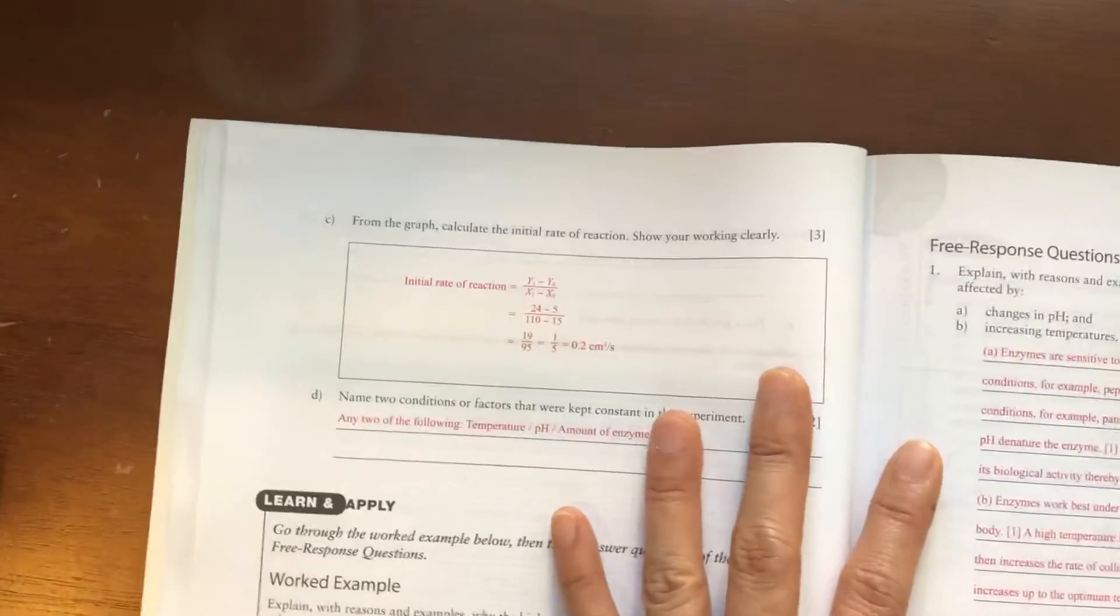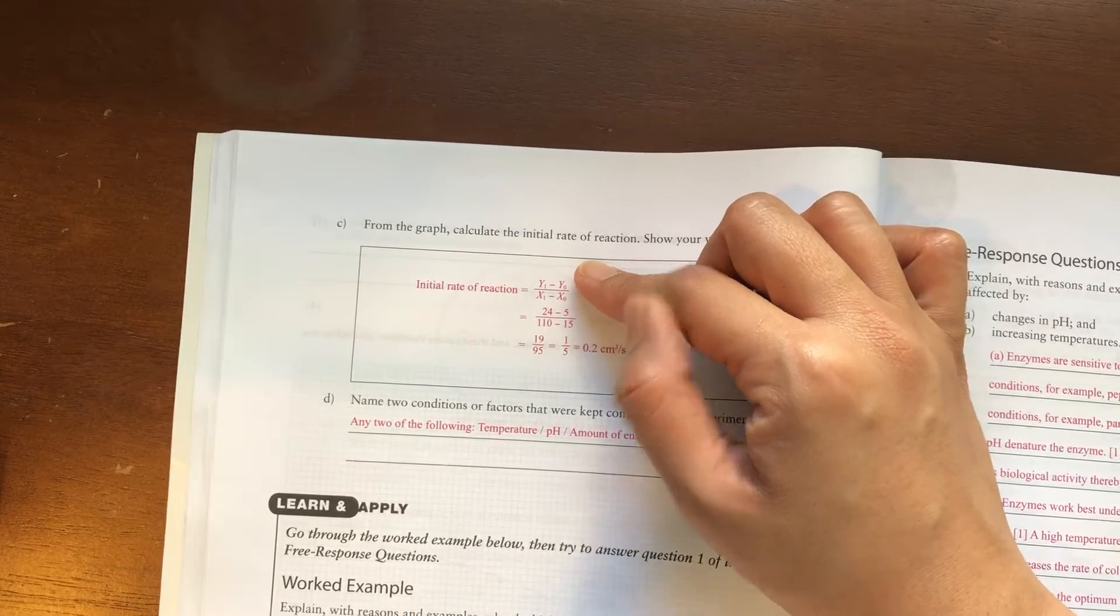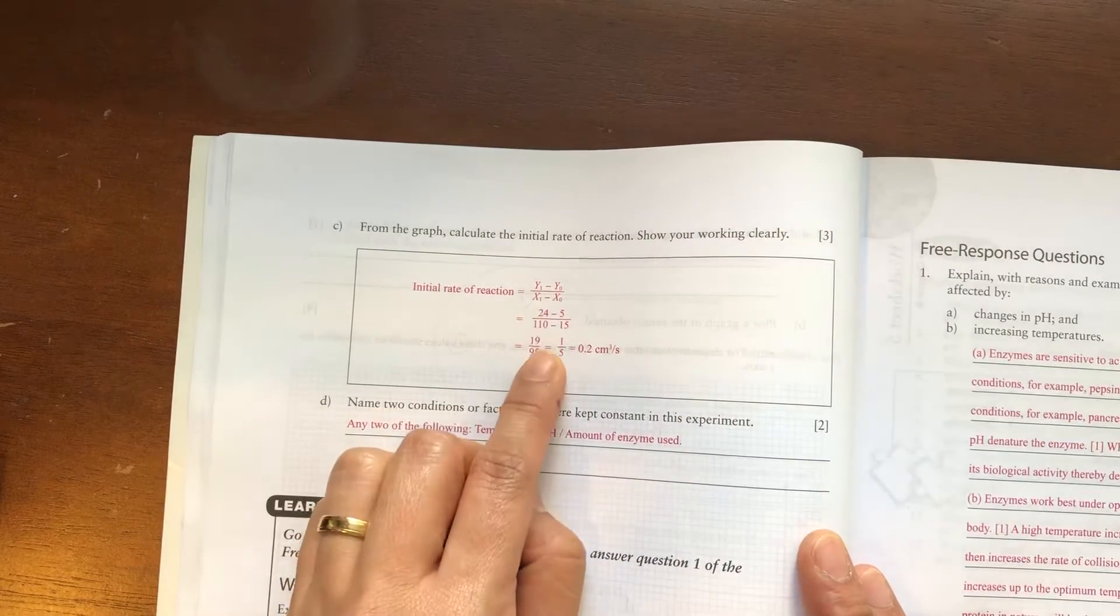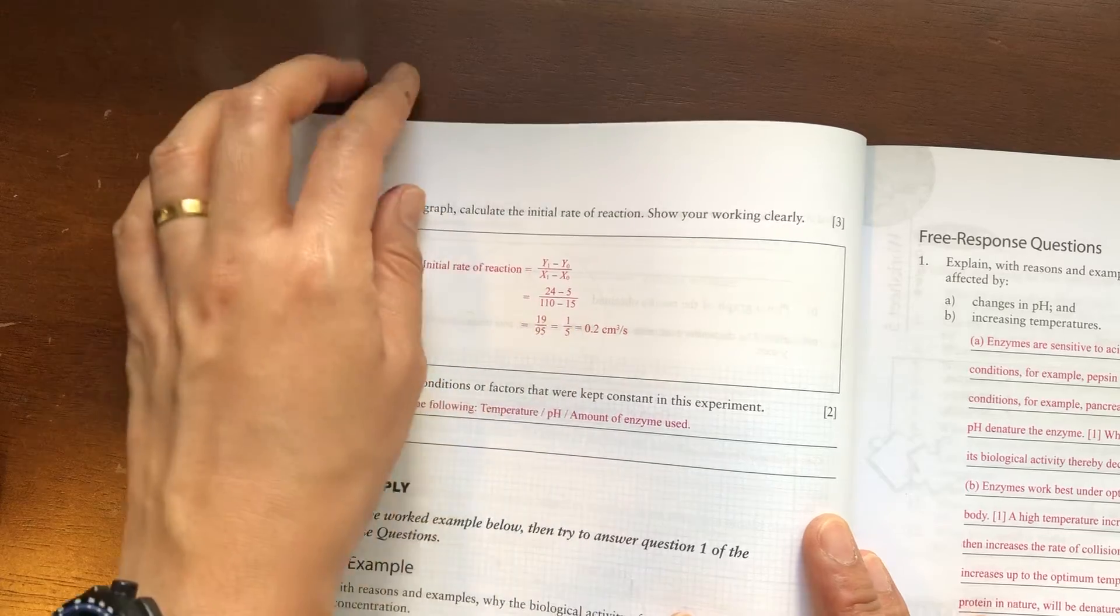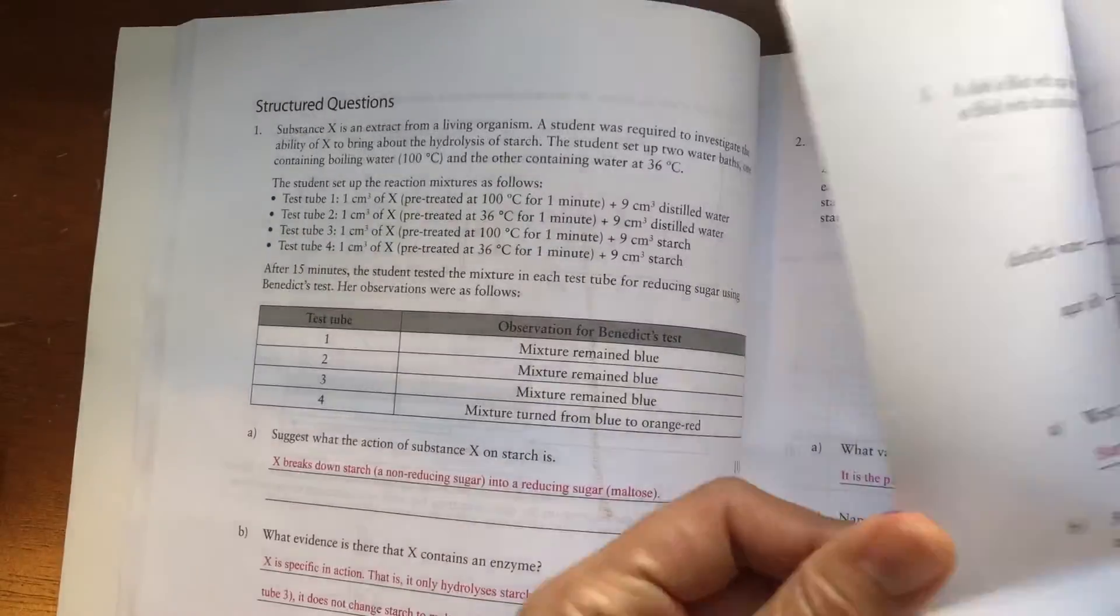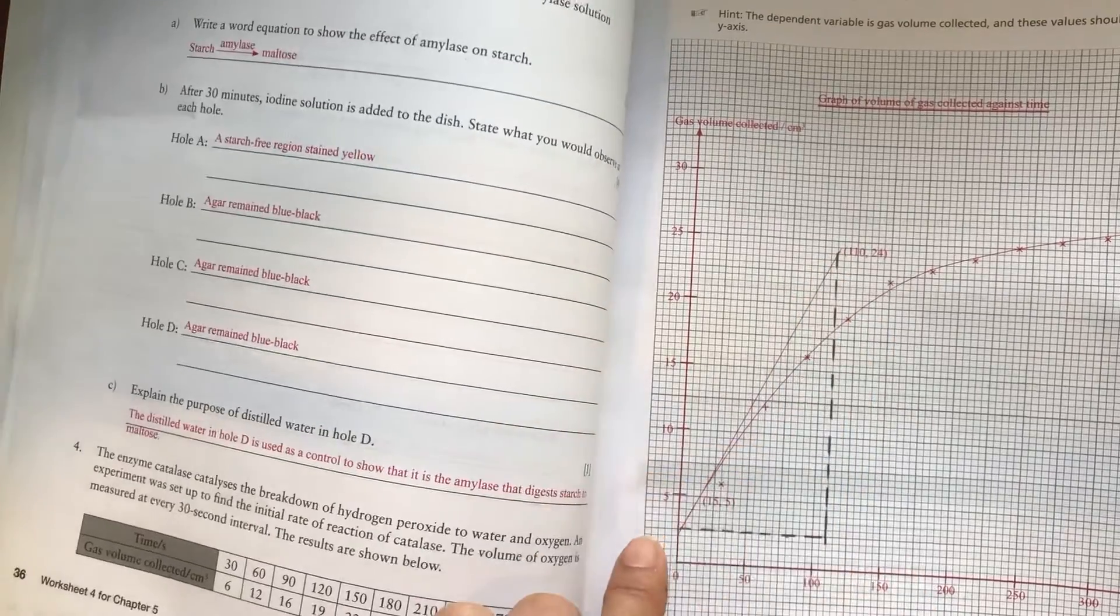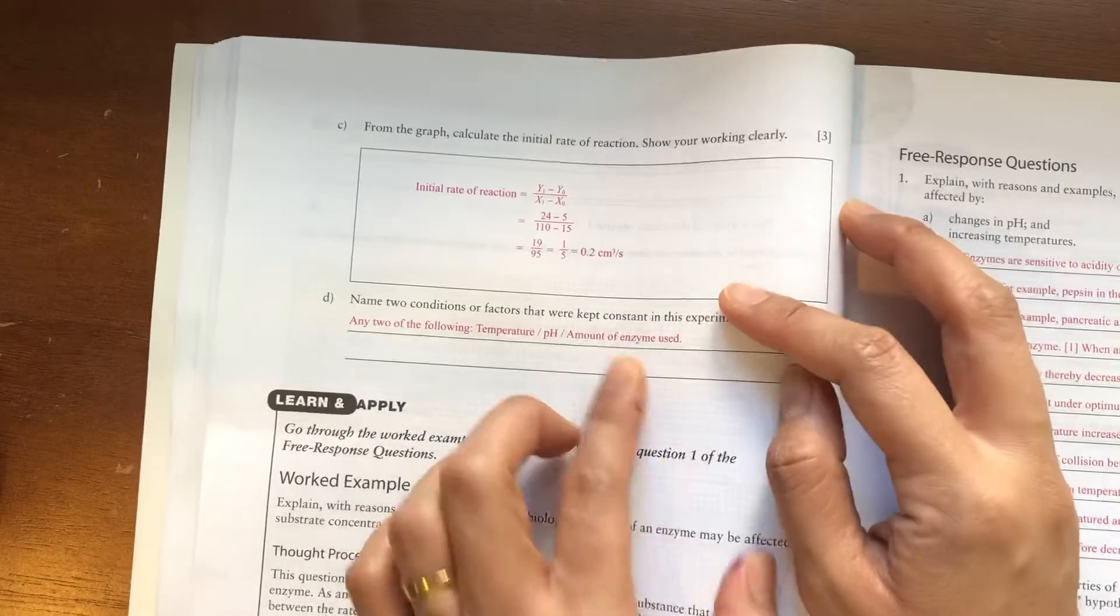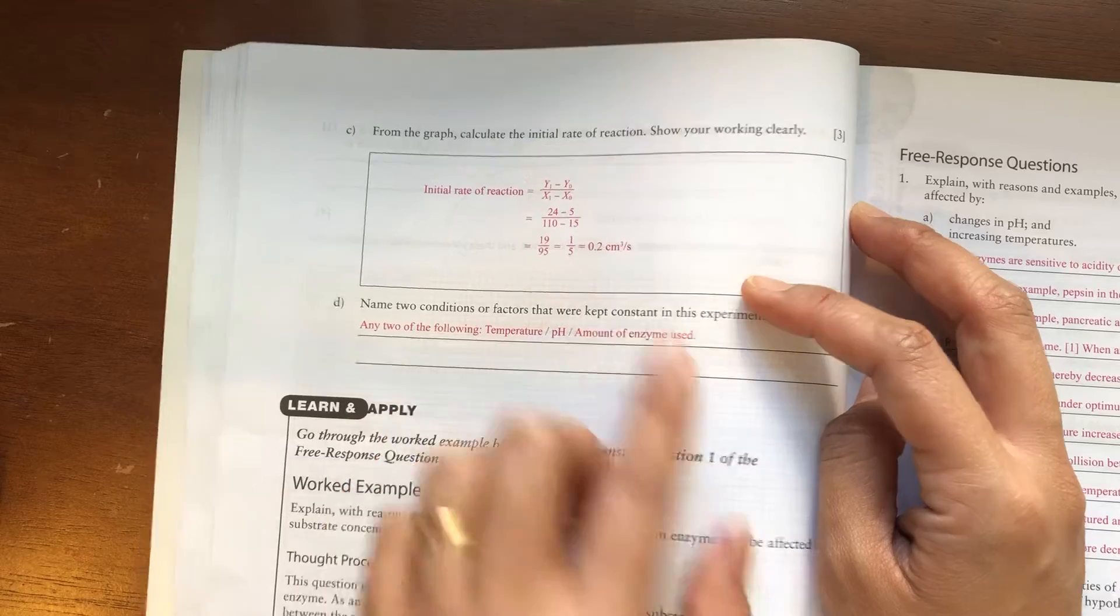So if you were to find out the initial reaction, it is the rise or run, the change in the y-axis, the final minus initial, then the time. So this will be your values based on the plots in the tangent, this coordinate and this coordinate. And you will have 0.2 cm cubed per second.